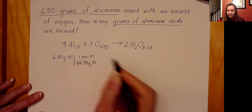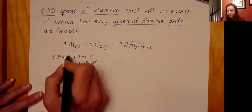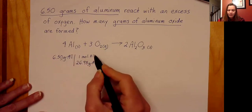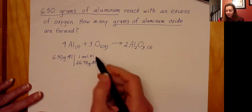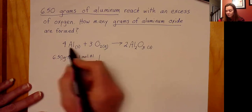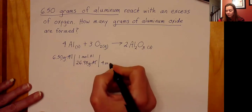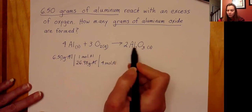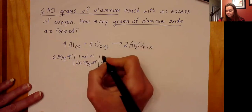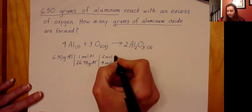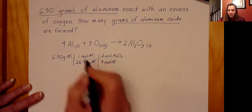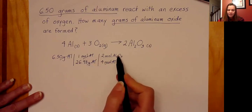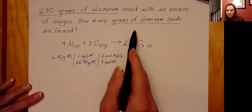Now I've canceled out grams of aluminum and have moles of aluminum. I still need a conversion to grams of aluminum oxide, so I use the mole ratio: for every 4 moles of aluminum, there are 2 moles of aluminum oxide. Now moles of aluminum cancel out, and I have moles of aluminum oxide. I just need to convert that to grams of aluminum oxide.